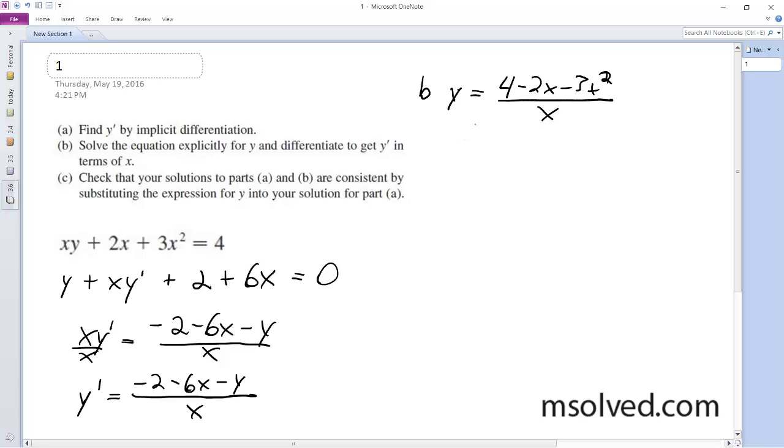and, well, we could do this. So y is equal to 4x to the negative 1 minus 2 minus 3x.